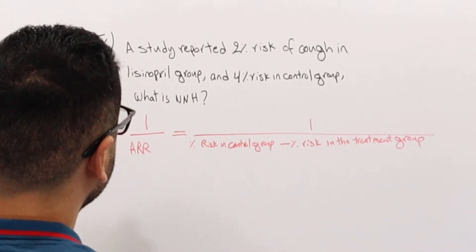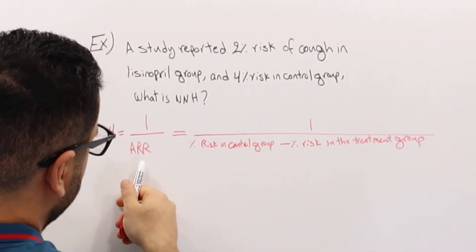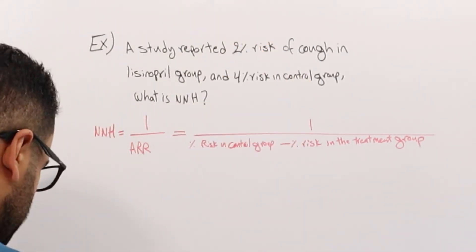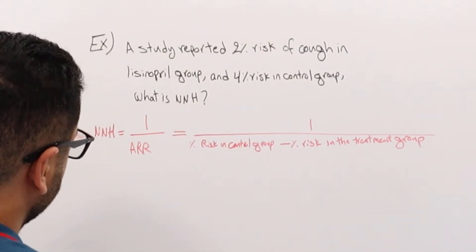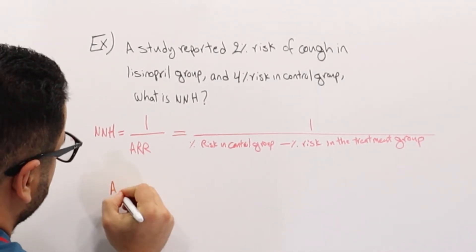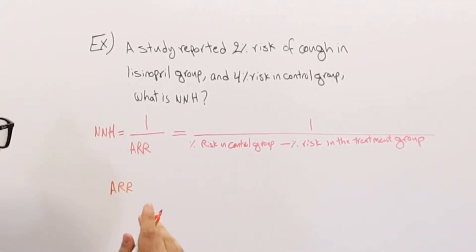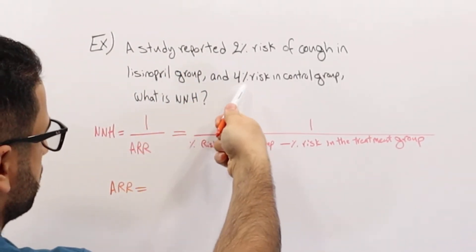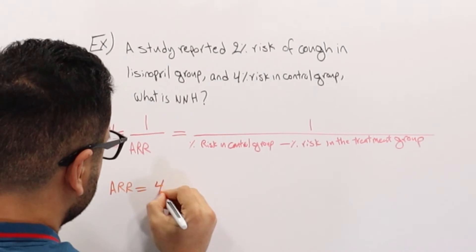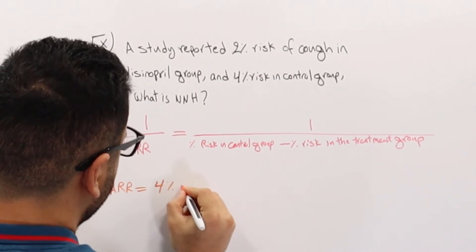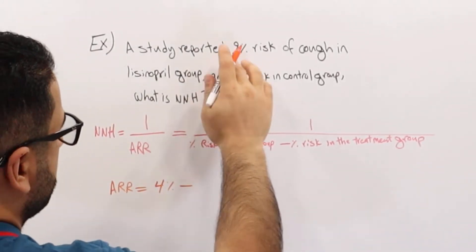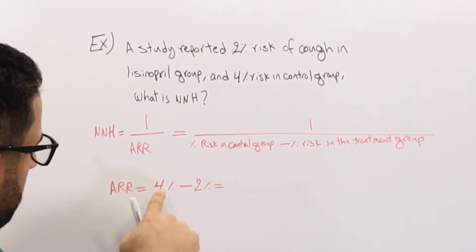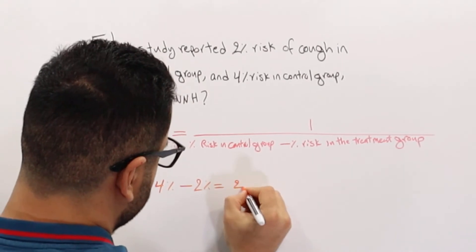Now that I know this, I need to find absolute risk reduction. I do have the risk in each group. Absolute risk reduction is basically the difference between the two risks in the group. This is going to be the control group, which is 4% minus the 2%. So 4 minus 2 is basically 2%.